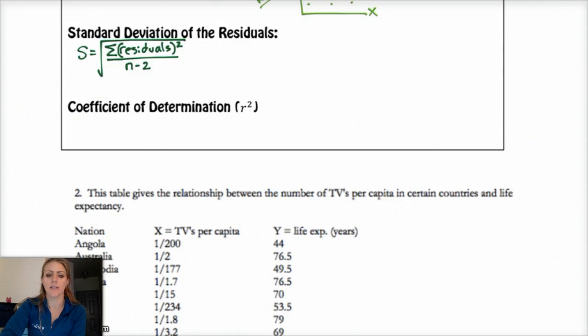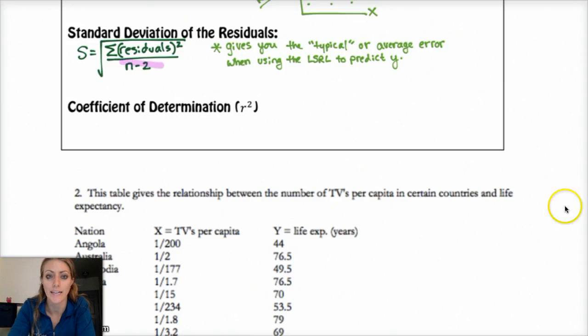And basically what this tells you in context is that it just generally gives you the typical or average error that the least squares regression line predicts. And if you're curious as to why it's n minus 2 instead of n or n minus 1, it basically just means the reason that they put that in there is because, this is long story short, with a line, a least squares regression line, if you have two data points and that's it, there's no way to actually tell the variability of the data because you have no information. So you need at least three points to determine that. So what that does is it basically makes it impossible for you to calculate the typical error unless you have three data points or more.